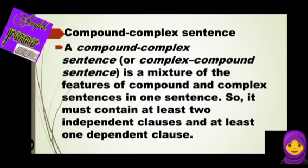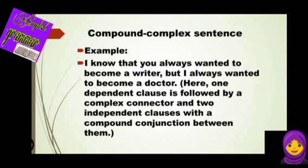Next, a compound-complex sentence or complex-compound sentence is a mixture of the features of a compound and complex sentence in one sentence. It must contain at least two independent clauses and at least one dependent clause. It has two independent and one or more dependent clauses. For example, 'I know that you always wanted to be a writer, but I always wanted to become a doctor.' Here, one dependent clause is followed by a connector and two independent clauses joined with a compound conjunction.